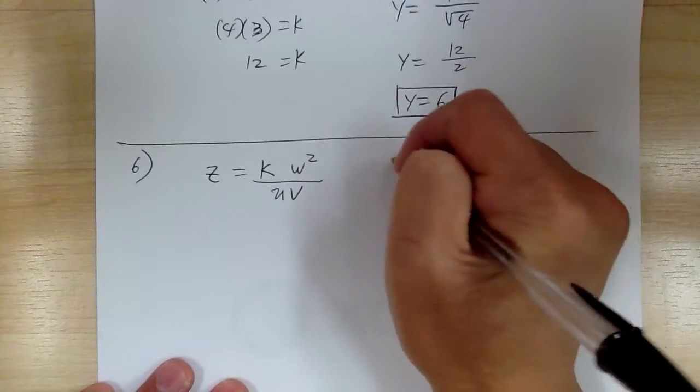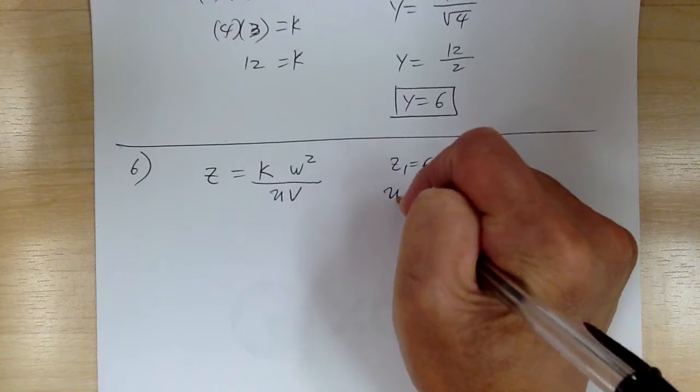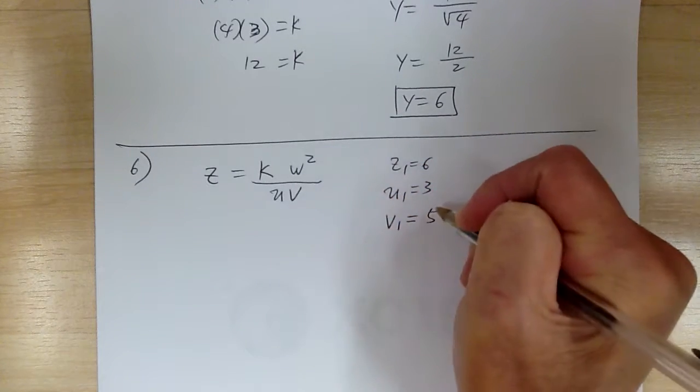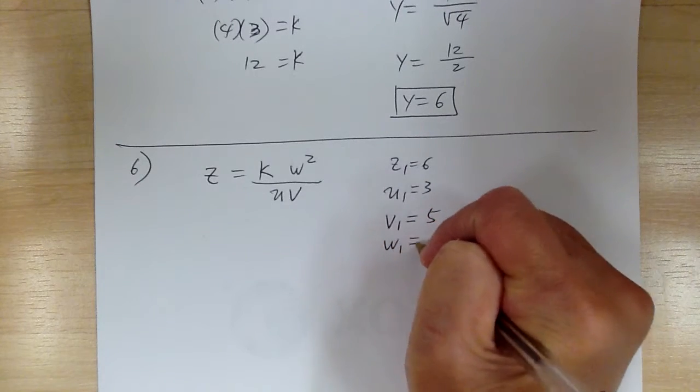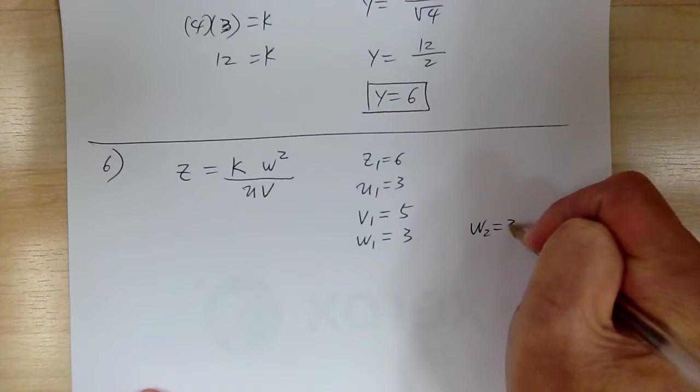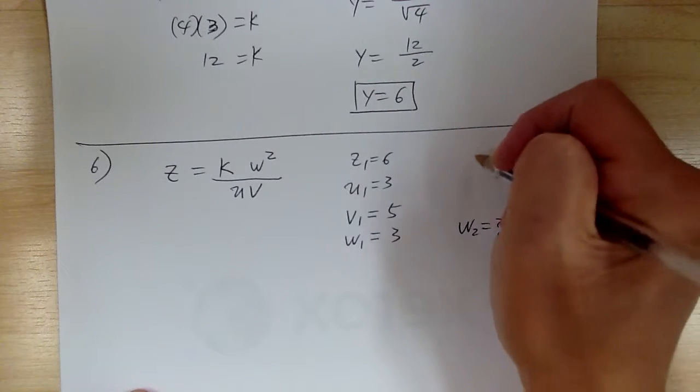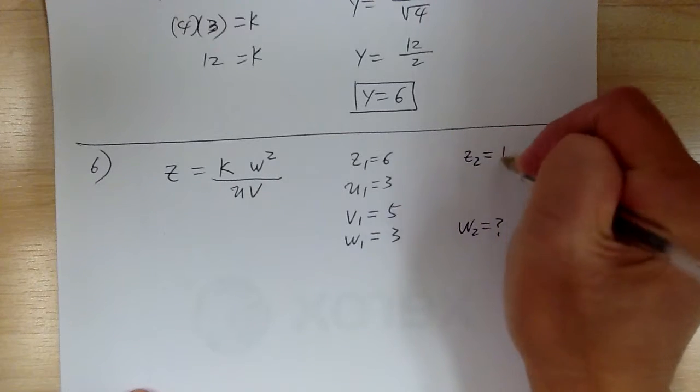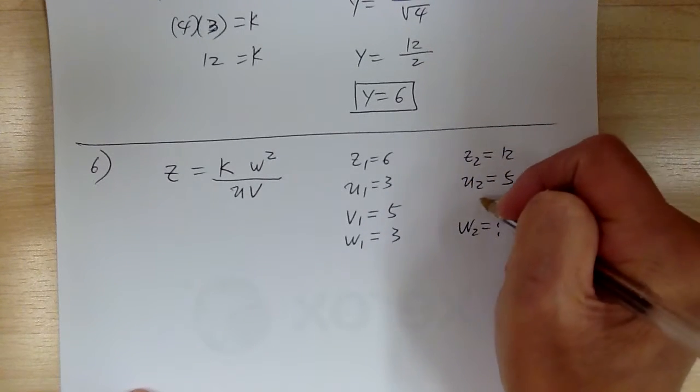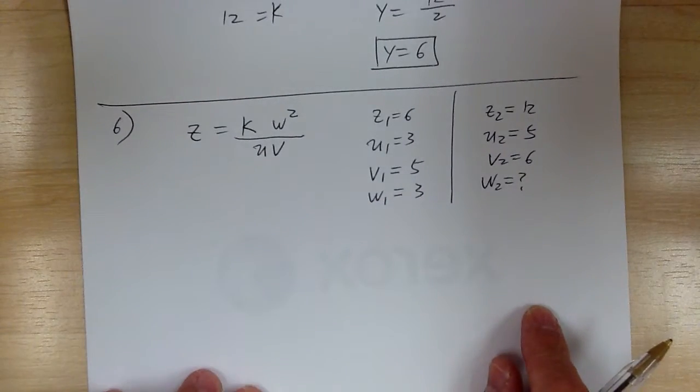So z varies directly as w squared and inversely as uv. It says and z, so z₁ equal to 6 when u₁ equal to 3, v₁ equal to 5, and w₁ equal to 3. It says find w, so that's w₂. When z₂ is equal to 12, u₂ equal to 5, and v₂ equal to 6. So this is all the information you have.